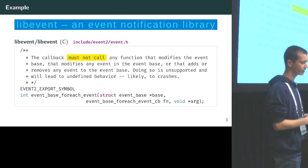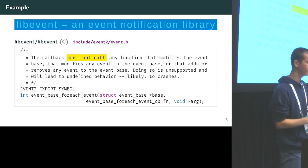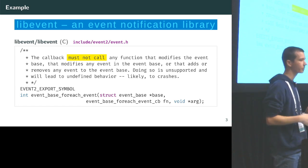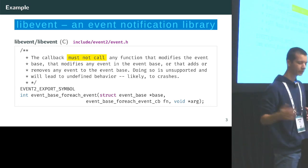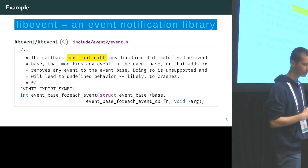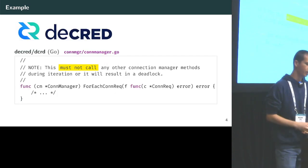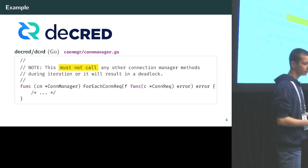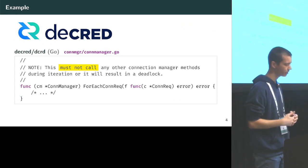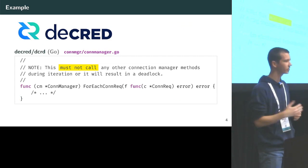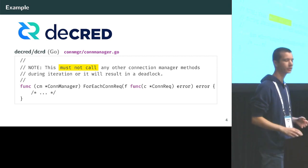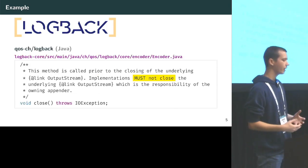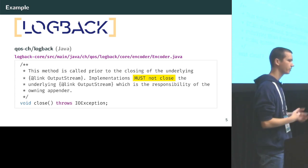We can look at another example: libevent, which is an event notification library. The documentation says the callback must not call any function that modifies the event base, modifies any event in the event base, or adds or removes any event to the event base — doing so is unsupported and will lead to undefined behavior, likely crashes. Decred is a cryptocurrency library written in Go, and the documentation says it must not call any connection manager methods during iteration or else it will result in a deadlock. Finally, a Java example: log4back is a logging framework.